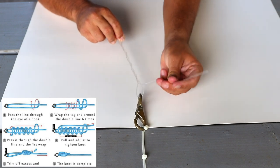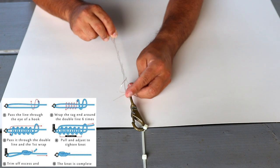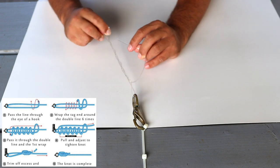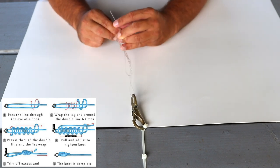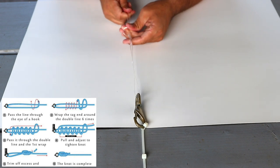So we wrap around the line five times: four and five. After our fifth time, we'll put it to the hole on the bottom, the loop on the bottom, and we'll take that tag end and go back through that loop on the top that we held. This is the important part.